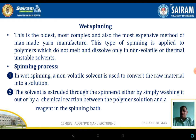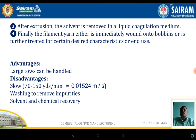In wet spinning, a non-volatile solvent is used to convert the raw material into a solution. The solvent is extruded through a spinneret, either by simply washing it out or by a chemical reaction between the polymer solution and a reagent in a spinning bath. After extrusion, the solvent is removed in a liquid coagulation medium. Finally, the filament yarn is either immediately wound onto a bobbin or further treated to achieve certain desired characteristics for the end user.